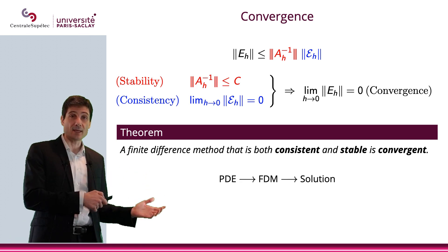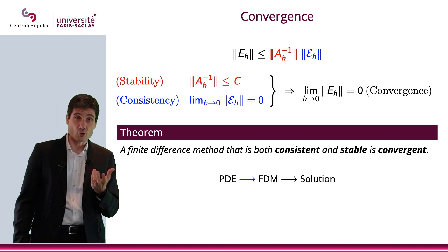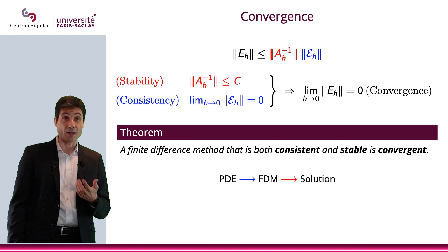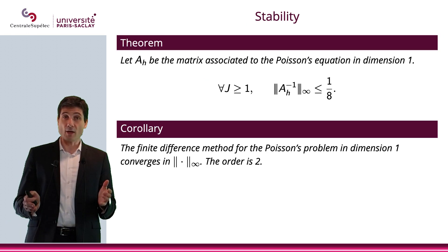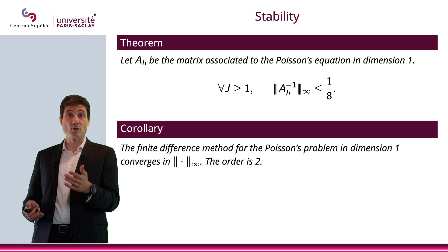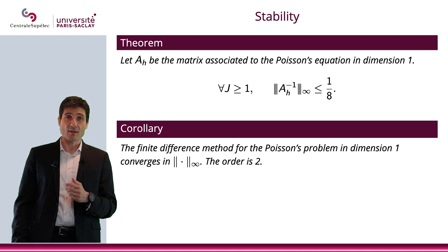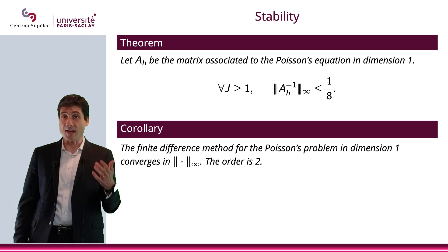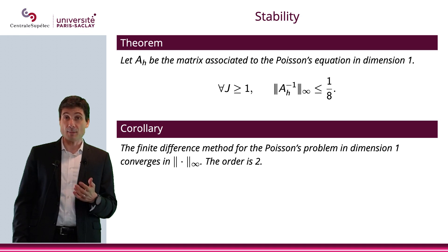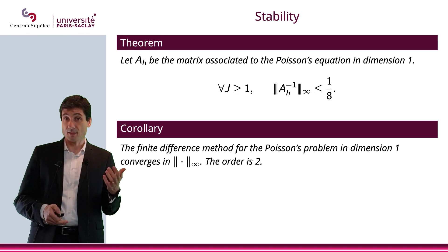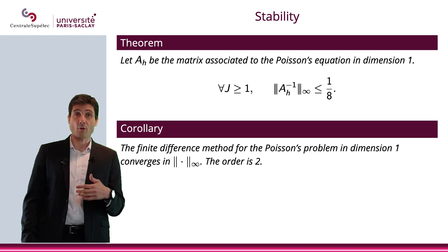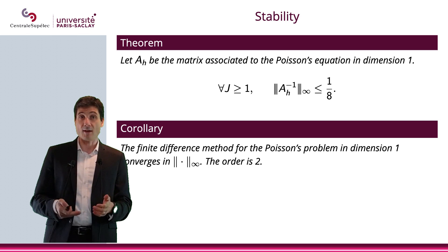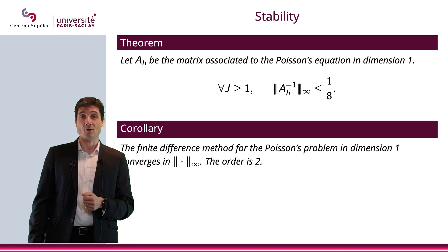We go from the PDE to the finite difference method — that's where we need consistency — and then to the solution, which requires stability. For the matrix A_h associated to Poisson's equation in dimension one, −u'' = f, the infinity norm of A_h^{-1} is bounded by 1/8, which is independent of j. This means we have stability, and we also had consistency of order 2 for this finite difference method, so we can conclude convergence of order 2.